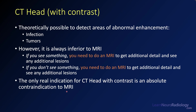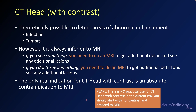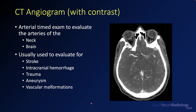If you don't have MRI available or there's an absolute contraindication — like metal in the eye — you can do a CT head with contrast, but it's rarely needed in the current era. CT angiogram is a special form of CT done with contrast, arterially timed to evaluate the arteries of the neck and brain. It's commonly used in stroke evaluation, to look for abnormalities behind intracranial hemorrhage such as aneurysm or vascular malformation, and to evaluate traumatic vessel injuries.